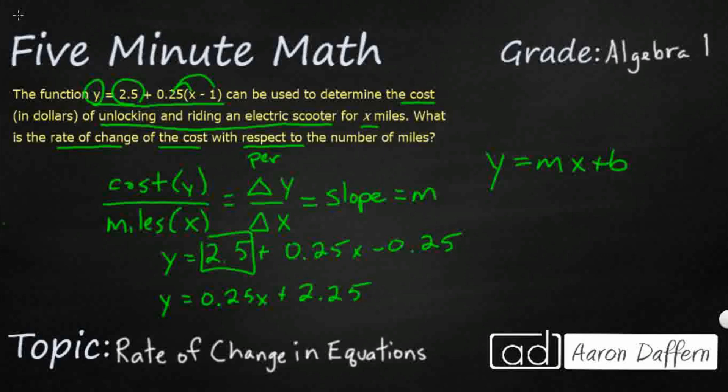So there's my equation. So when I'm looking for my slope, the rate of change is going to be right there. It's that coefficient in front of that x. So the rate of change is going to be that 0.25, or 25 cents per mile.